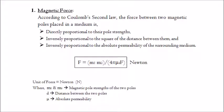The unit of force is Newton. Where m1 and m2 are the magnetic pole strengths of the two poles, d is the distance between the two poles, and μ is the absolute permeability.